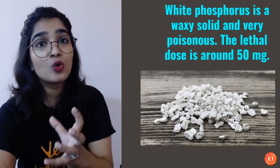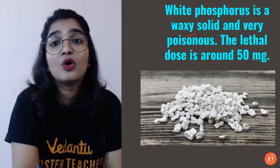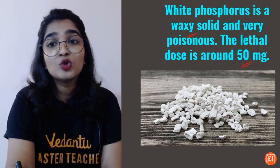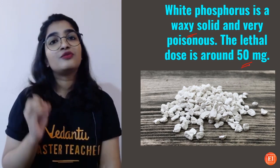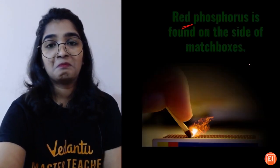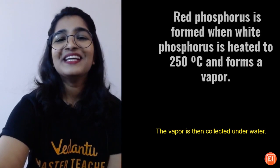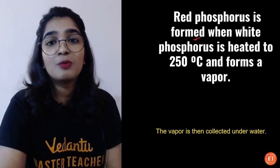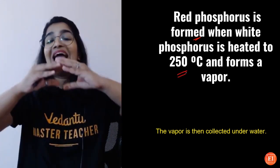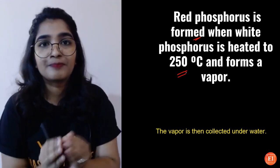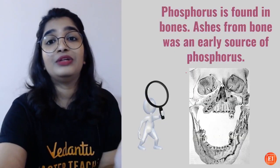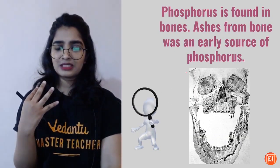White phosphorus glows in the dark, is a waxy solid, and is very poisonous. The lethal dose is consuming more than 50 mg of phosphorus. Red phosphorus is formed when white phosphorus is heated to 250 degrees Celsius, forming vapors that are then collected under water.